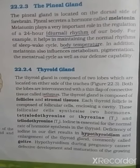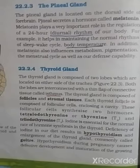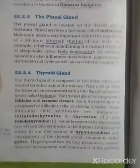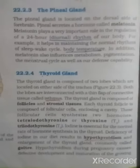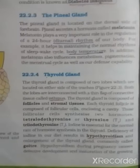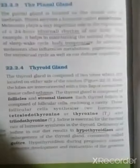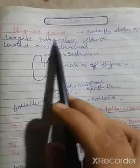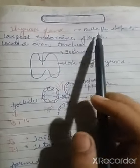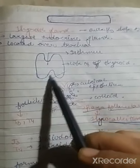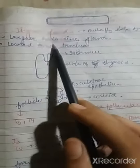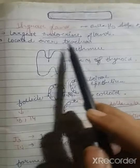Now we study about the thyroid gland. The thyroid gland is a butterfly-shaped gland and it is the largest endocrine gland, located over the trachea.